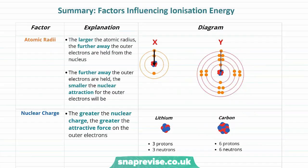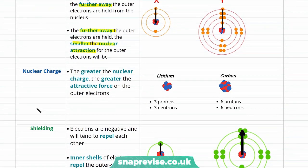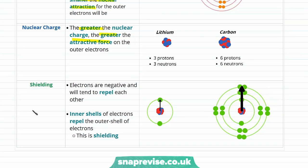Let's summarise the factors influencing ionization energy. First, atomic radius: the larger the atomic radius, the further the outer electrons are from the nucleus, the smaller the nuclear attraction, and the less energy required to remove them — giving a smaller first ionization energy. Second, nuclear charge: the greater the nuclear charge, the greater the attractive force on the outer electrons. For example, carbon has six protons versus lithium's three, making carbon's nucleus more positive. Third, electron shielding: electrons are negative and repel each other; inner shells repel outer shells — this is shielding. The greater the degree of shielding, the weaker the attraction for the outermost electrons, leading to a greater atomic radius and lower ionization energy.